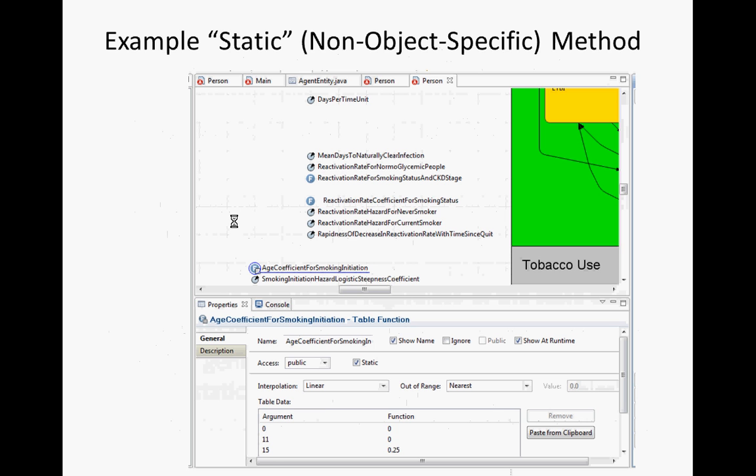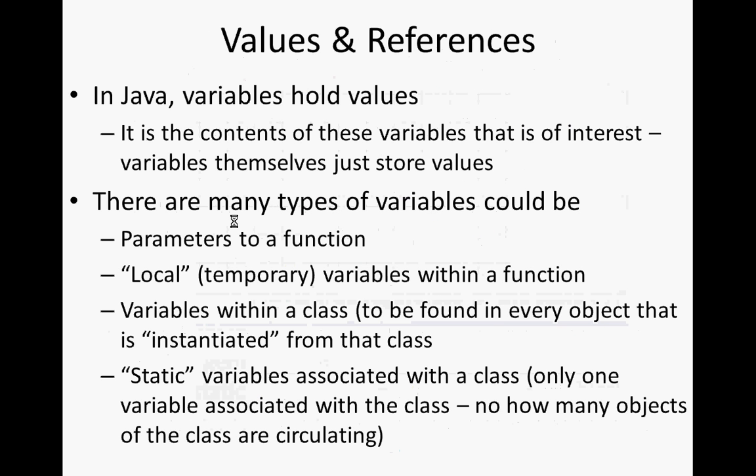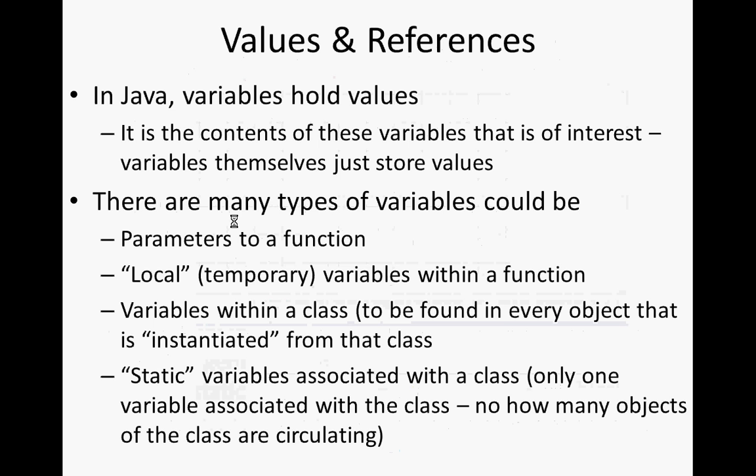Static things are not associated with a particular object or a particular instance — they're associated with a class, associated with personhood, not a particular person. This value that relates one thing to another is not changed per individual, so we associate it with the class.